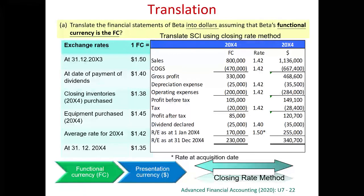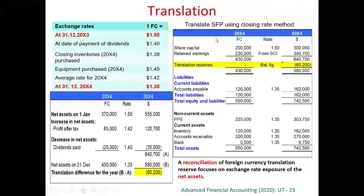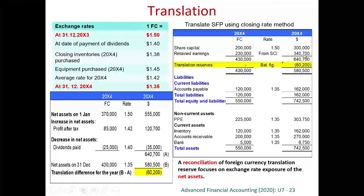After we translate the income statement, we translate the statement of financial position. All assets and liabilities — property, plant and equipment, inventory, accounts receivable, bank, and accounts payable — will be translated using the closing rate, that is the year-end rate of 1.35. After translating all assets and liabilities, we translate the equity. For share capital, since we acquired the subsidiary on 31st of December 2003, the relevant exchange rate is 1.5. For retained earnings, we copy the figure of 340,700 from the statement of retained earnings.